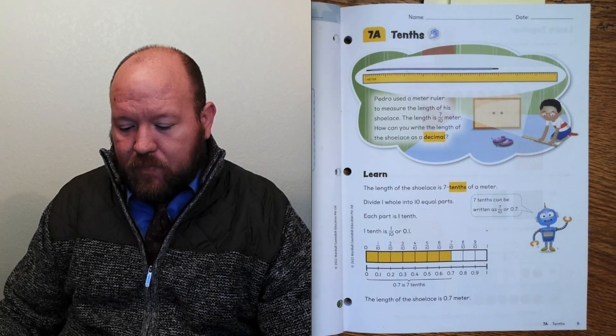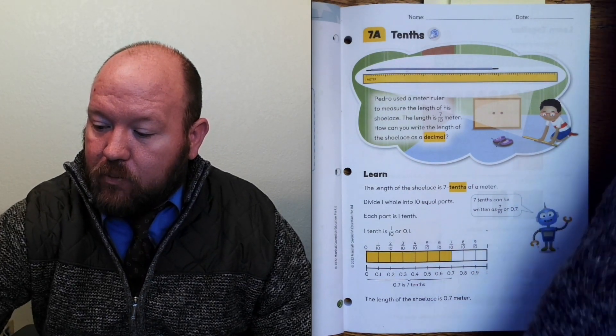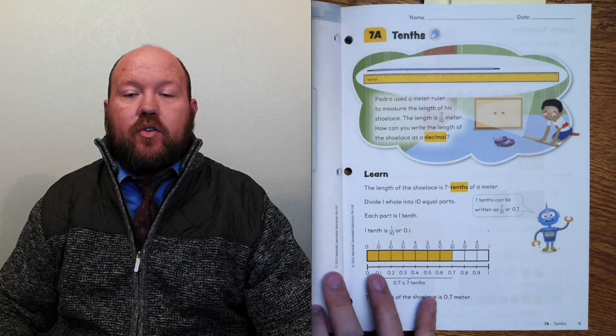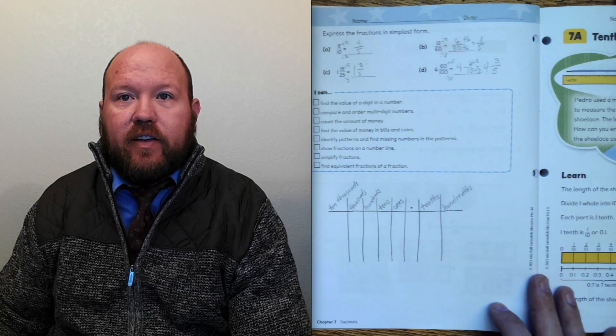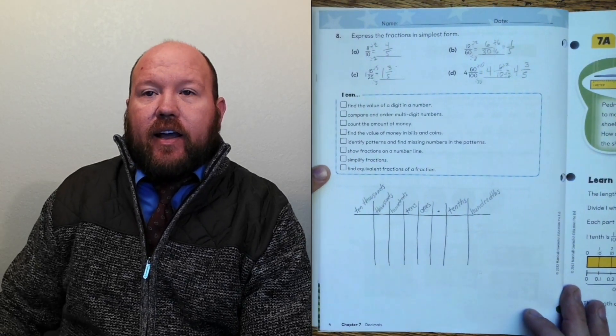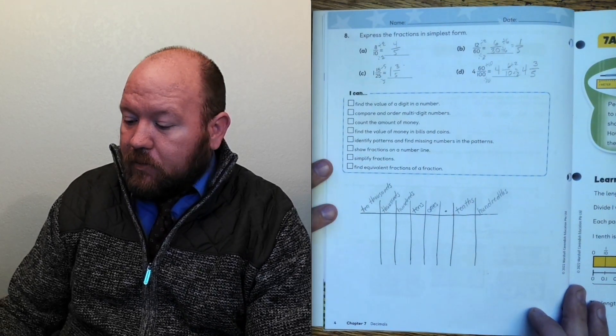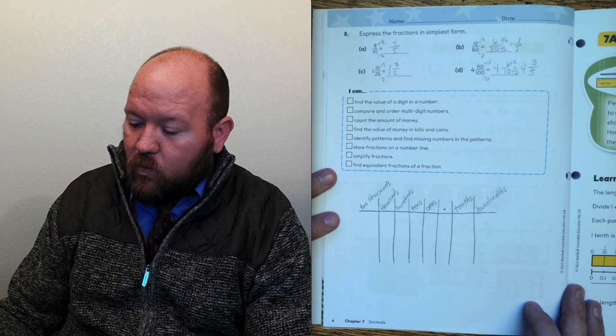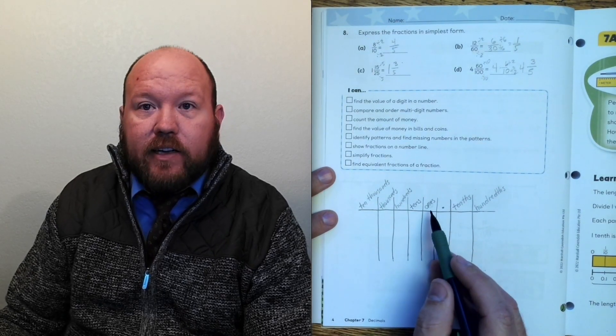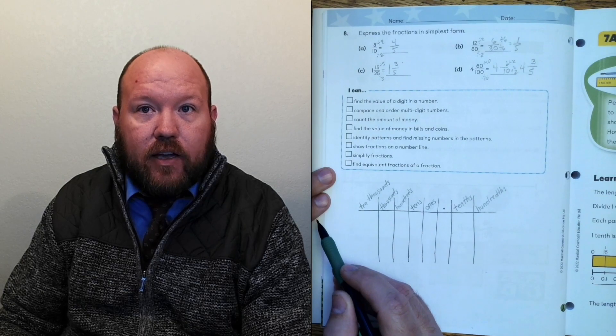Before we do that, I want to flip over to page 4, which we've already done, and draw a little bit of a chart at the bottom. Up to this point this year, we have been learning about place value in terms of 1s, 10s, 100s, 1000s, 10,000s, and so on.